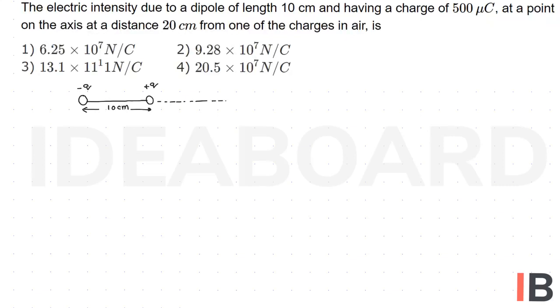Now, we have to find electric field intensity at a distance of 20 centimeter from one of the charge in air, for example, at this point, say point B.